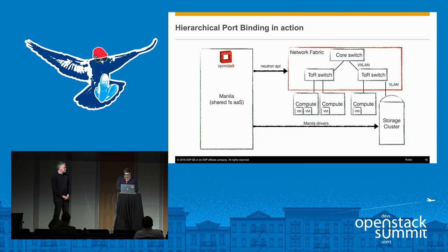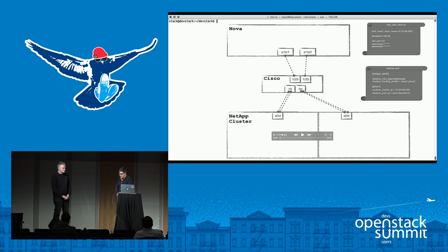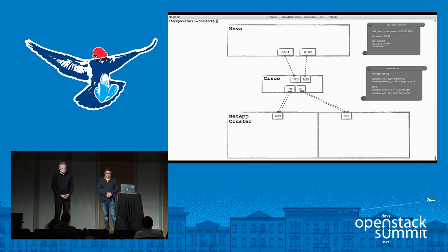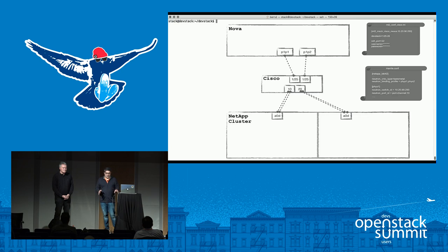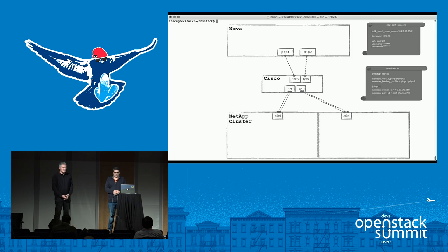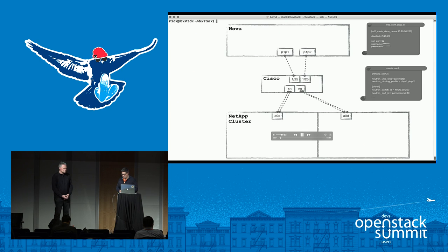We created a test lab to reproduce all these features, and we will show you a small demo of how this works. What we have is a really small set of pieces: a compute node x86 server, a Cisco switch, and a NetApp cluster, all connected with two ports. The compute node has the Cisco Neutron driver activated, meaning Cisco provisioning is fully automated.